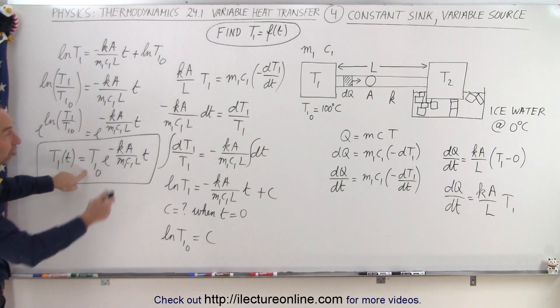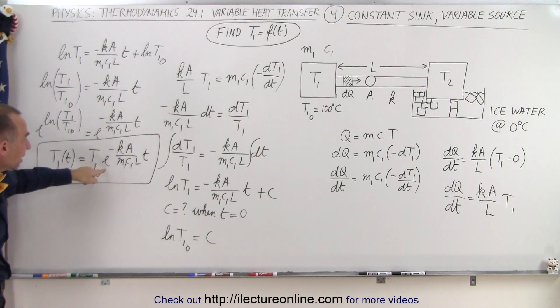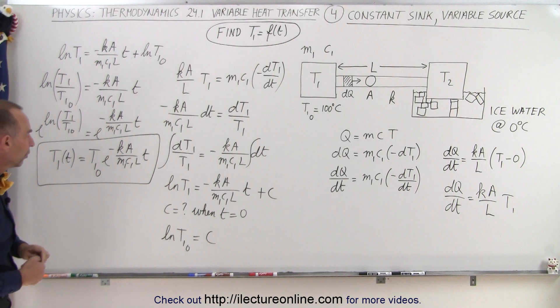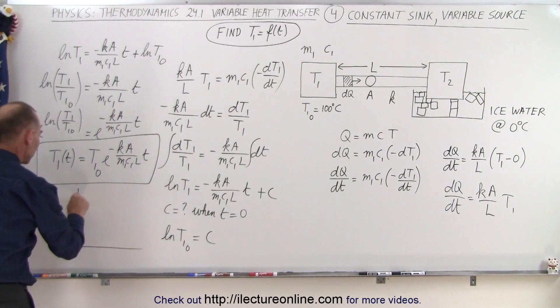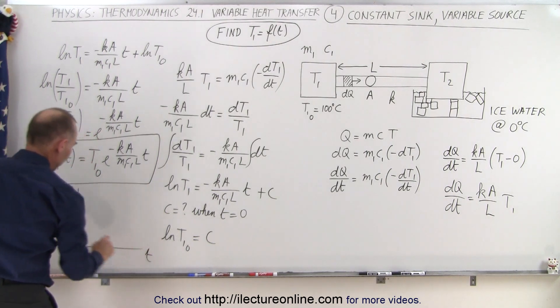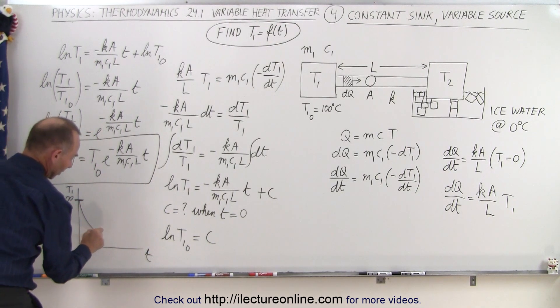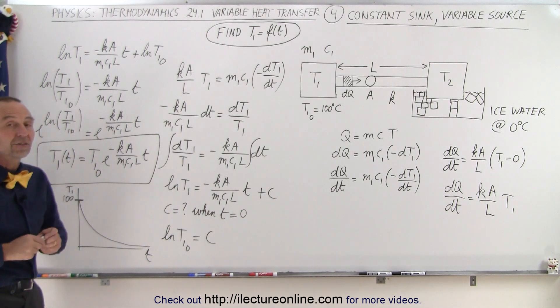When t is equal to 0, the initial temperature would be 100. And then, of course, it will exponentially decay as e to the minus Ka over M1C1 L times the time. So if you're going to graph this, you can see that we start at a temperature of 100, this would be t1, and as time continues like this, you can see the temperature will drop like this. And that's what this equation signifies.